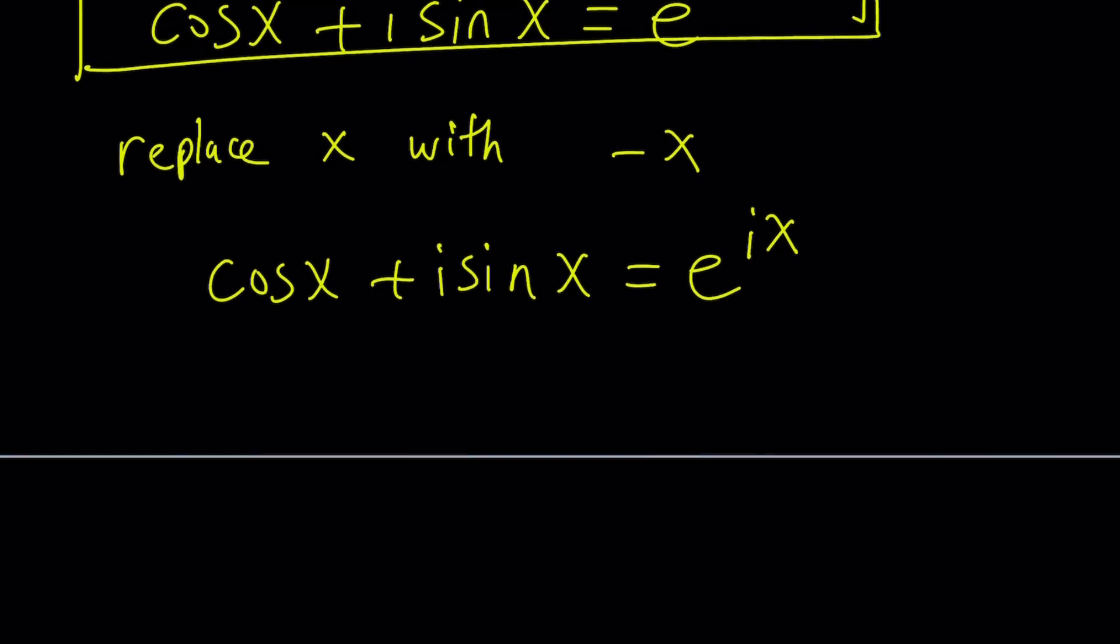And then I'm going to replace x with negative x. By the way, if I sound a little different, it's because I recorded about 5, 6 videos and I just realized after all these recordings that the mic was off. So I have to re-record all these videos. Anyways, so we're going to replace x with negative x. So we're going to get cosine of negative x plus i sine of negative x equals e to the power negative ix.